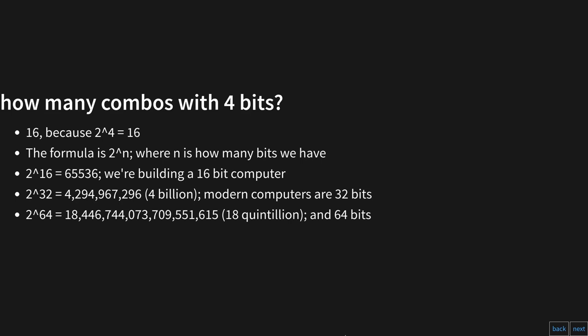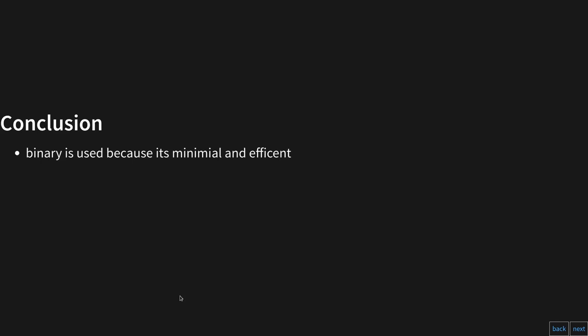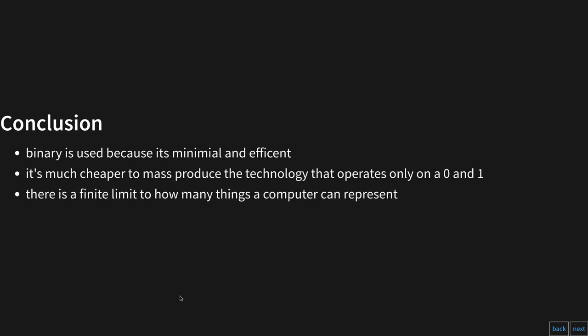You may wonder: we're building a processor from the 1970s — isn't 16 bits outdated? Surprisingly, no. 99% of the underlying architecture remains the same to this day. In conclusion, binary is like a two-letter alphabet system. We use it because it's a very efficient and minimal language, cheap to mass produce, and there's a finite limit to how many things a computer can represent, determined by 2 to the n power.